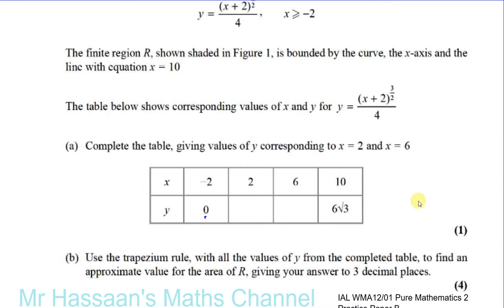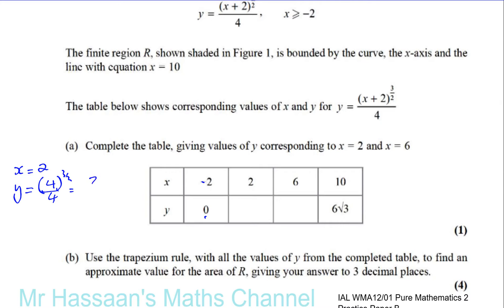When x = 2, y = (2 + 2)^(3/2) / 4 = 4^(3/2) / 4. This means the square root of 4 cubed: the square root of 4 is 2, and 2 cubed is 8, so 8 over 4 gives us 2. So when x = 2, y = 2.